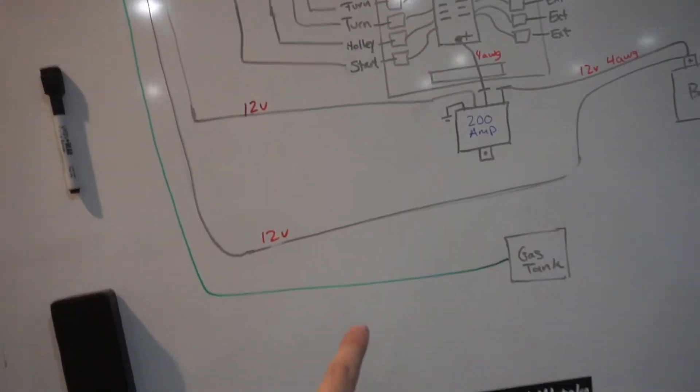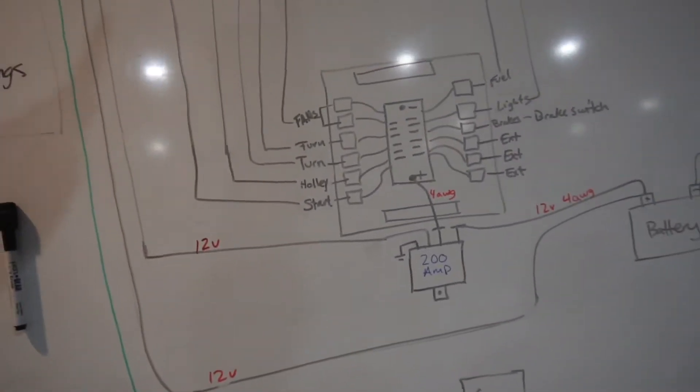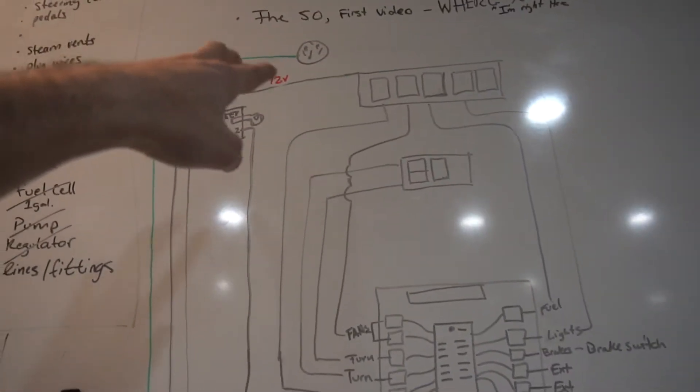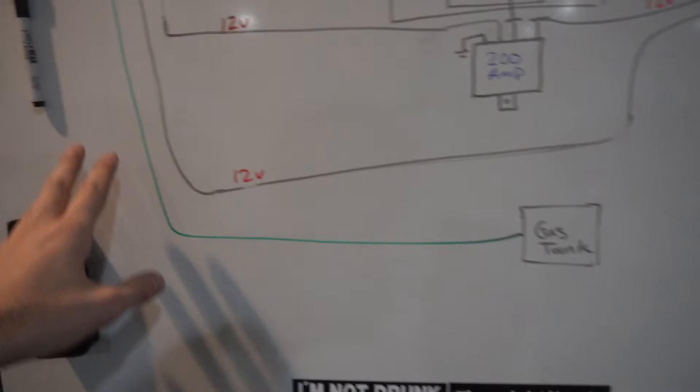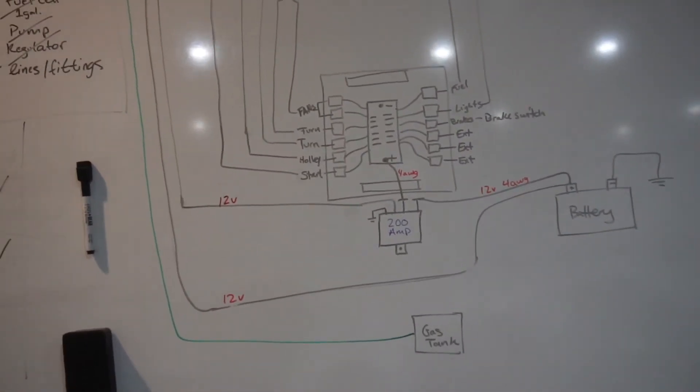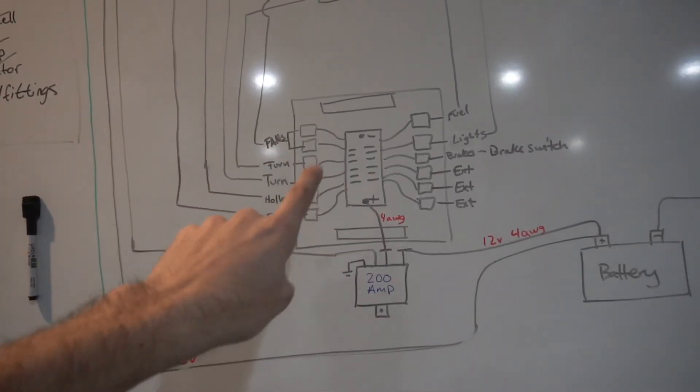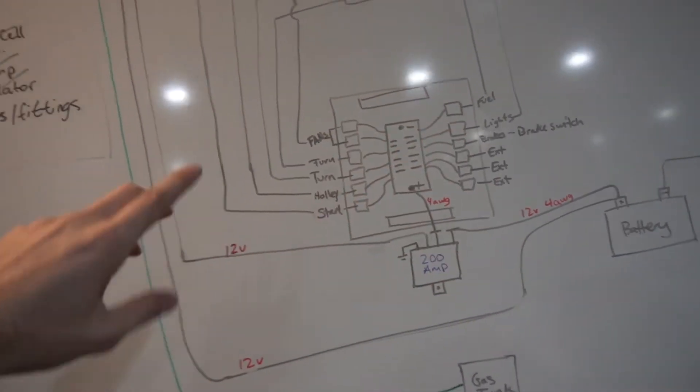I'm going to have another wire going up to the gas gauge so that I know the level in the tank. I added that to this just so I could look at this whole thing and decide, okay, how many wires do I need to run from the panel, which is going to be located in the back, all the way up to the switches, which will be in the front.